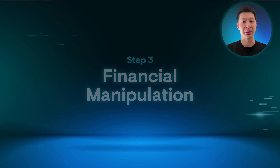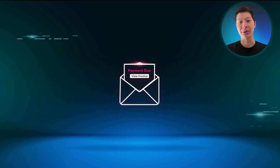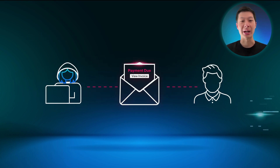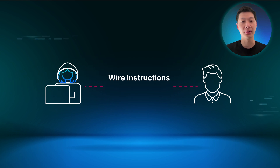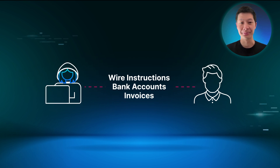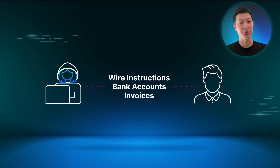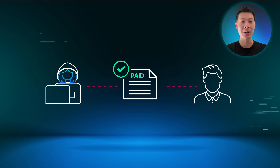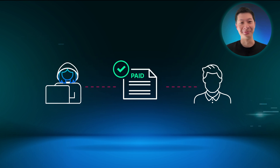Step three is financial manipulation. The main goal is to trick the victims into transferring money to attacker-controlled accounts by changing payment details on things like wire instructions, bank accounts or invoices. The victim has no reason to question these changes at this point, so they approve the wire transfer. The money is gone and no detection alerts were triggered.